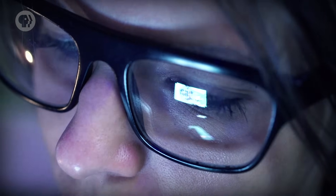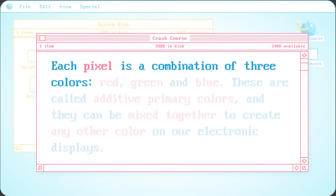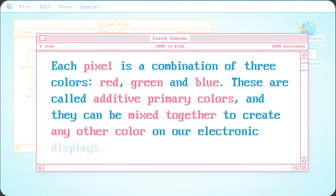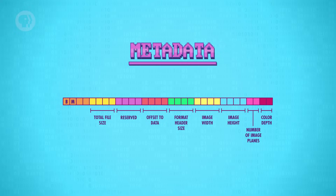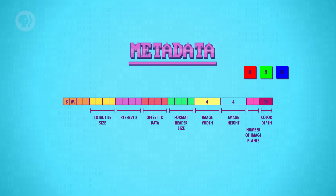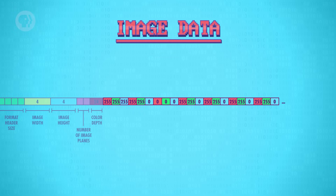Now that you're getting the hang of file formats, let's talk about bitmaps, or BMPs, which store pictures. On a computer, pictures are made up of tiny square elements called pixels. Each pixel is a combination of three colors – red, green and blue. These are called additive primary colors, and they can be mixed together to create any other color on our electronic displays. Now just like WAV files, bitmaps start with metadata, including key values like image width, image height and color depth. As an example, let's say the metadata specified an image 4 pixels wide by 4 pixels tall, with a 24-bit color depth. That's 8 bits for red, 8 bits for green and 8 bits for blue. As a reminder, 8 bits is the same as one byte. The smallest number a byte can store is zero, and the largest is 255.